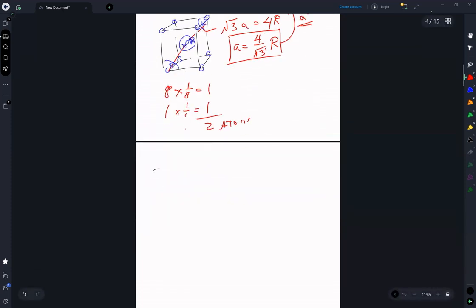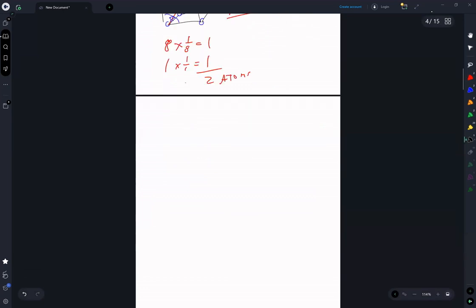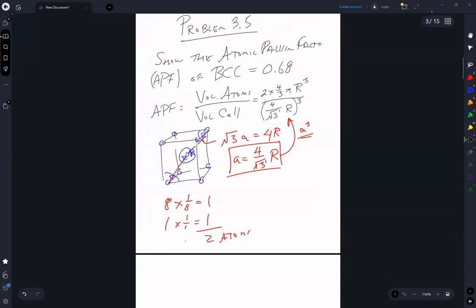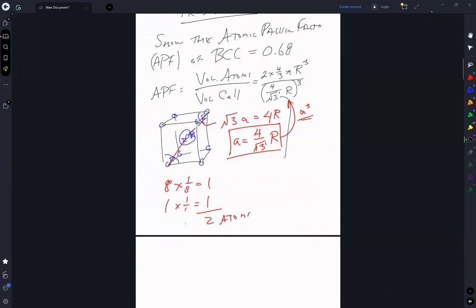And we can now write, this simplifies to pi three to the one half over two to the third, which is equal to 0.68. That's the atomic packing factor.